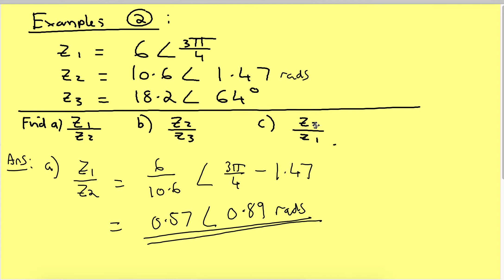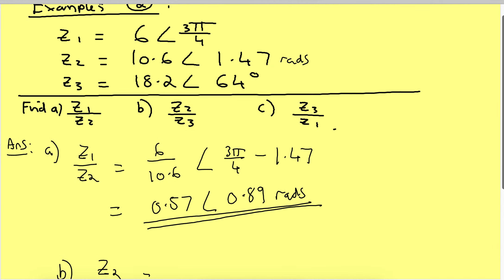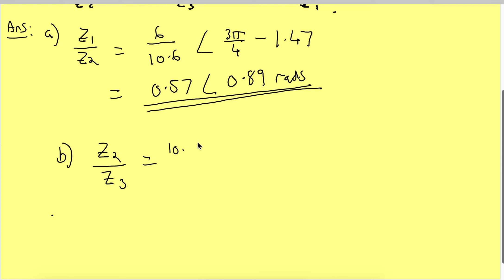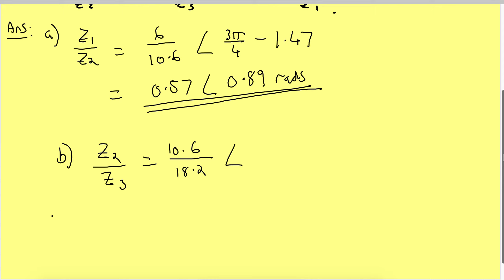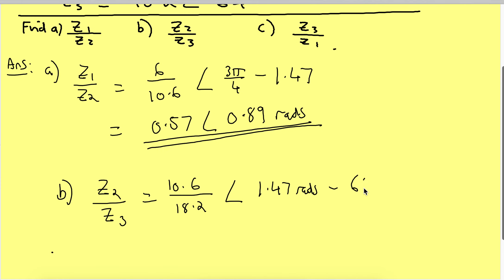Z2 divided by Z3. So B. Z2 divided by Z3 — Z2 divided by 3. So what have we got? We've got 10.6, Z2 divided by 18.2 and an angle of 1.47 radians take away 2.64 degrees.